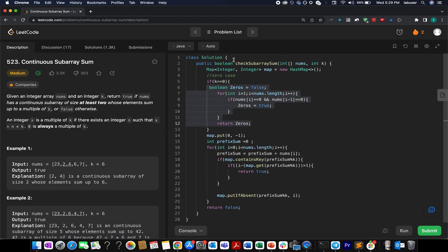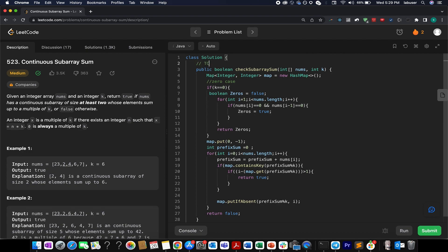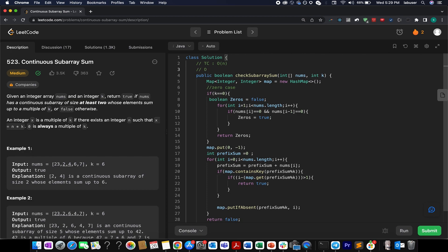Accepted. The time complexity of this approach is order of n. The space complexity is again order of n. No I think it would be order of k. Why? Because in the worst case we will have k elements as part of our map.